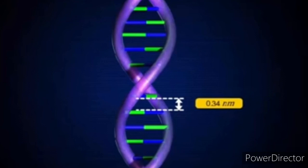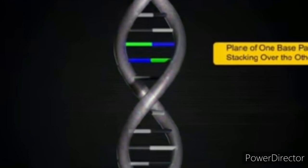Successive base pairs are at a distance of 3.4 Ångström units. There are 10 base pairs per turn of the DNA molecule. The amount of purines equals the amount of pyrimidines. That means: adenine plus guanine equals thymine plus cytosine, adenine equals thymine, and guanine equals cytosine. This is called Chargaff's base equivalence rule.